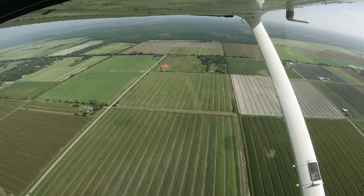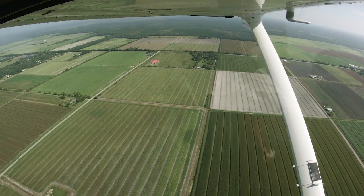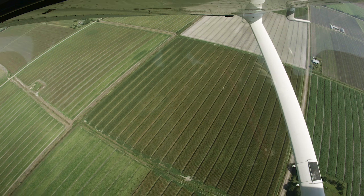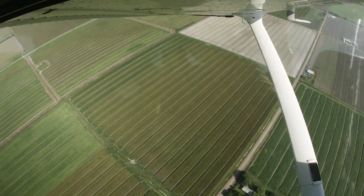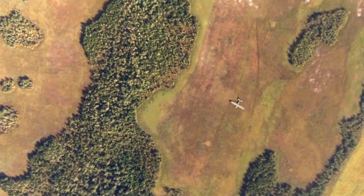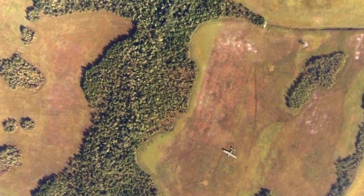In order to fly turns around a point, you will need a ground reference point. Select a reference point that is easily identifiable from all sides and small enough that you can easily identify your radius of turn. Be sure that you select an area in which an emergency landing can be made if necessary.